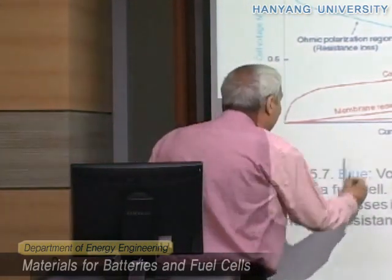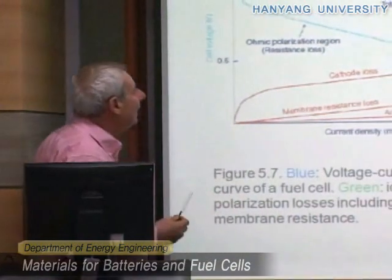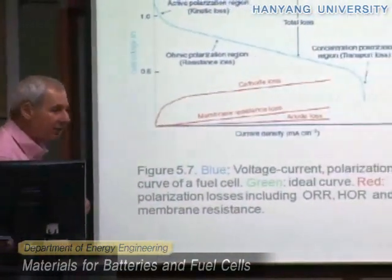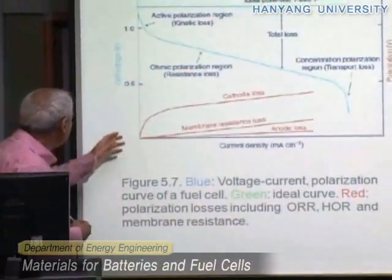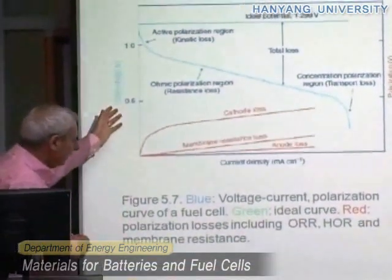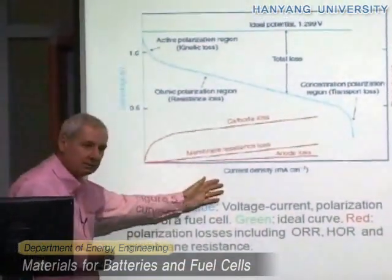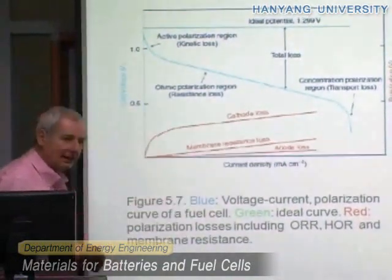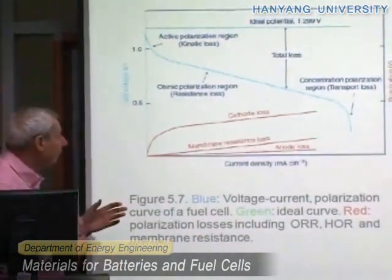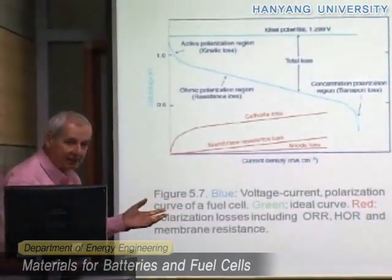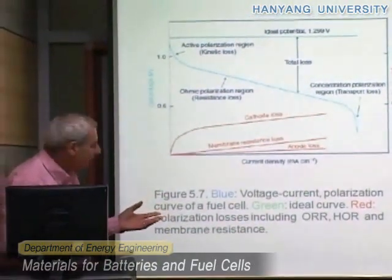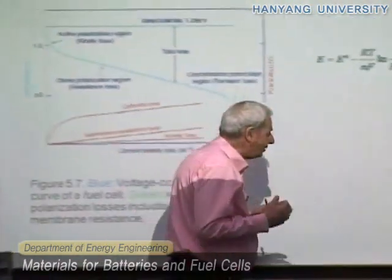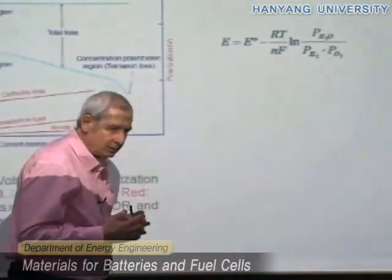This is now a typical plot for evaluation of a cell, including a fuel cell. Here we report the voltage and we report the current. We use these two parameters because the highest the voltage, the better it is in terms of energy. And the same applies for the current. Remember that energy is the product between voltage and current.